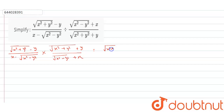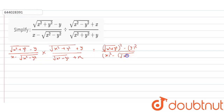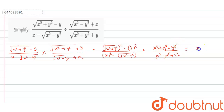So the numerator becomes root of (x² + y²) whole square minus y², and the denominator becomes root of (x² - y²) whole square minus x², applying the (a+b)(a-b) = a² - b² identity. This simplifies to x² + y² minus y² upon x² - y² minus x², which further simplifies. The x² + y² terms cancel, giving x² upon y².